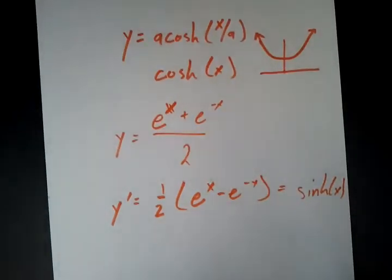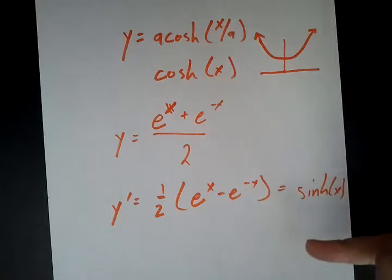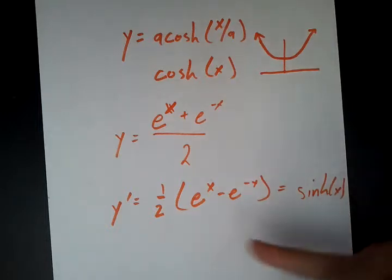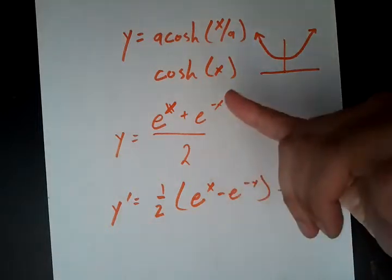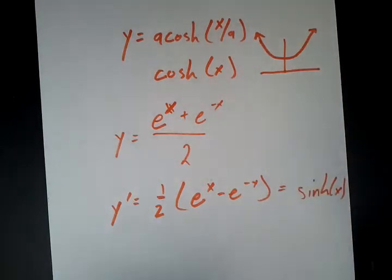So, whereas the derivative of cosine x is negative sine x, the derivative of cosh x is sinh, not negative. And if we take the derivative of sinh x, you can look at this and see it's going to go back to cosh x. So it just cycles cosh sinh, cosh sinh, never a negative in there. And you can see why.